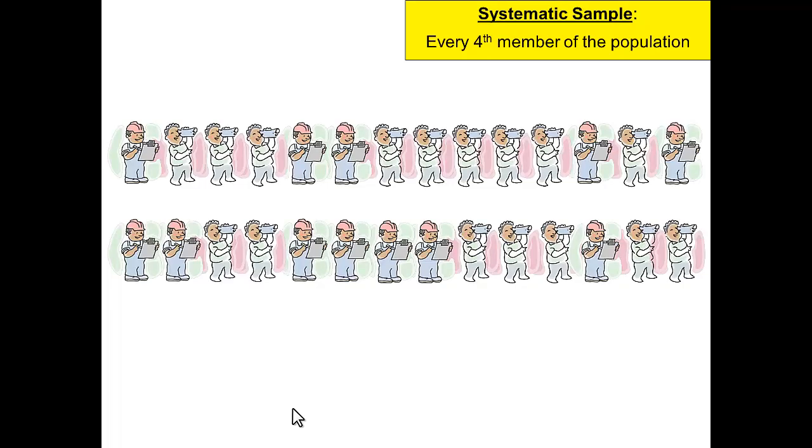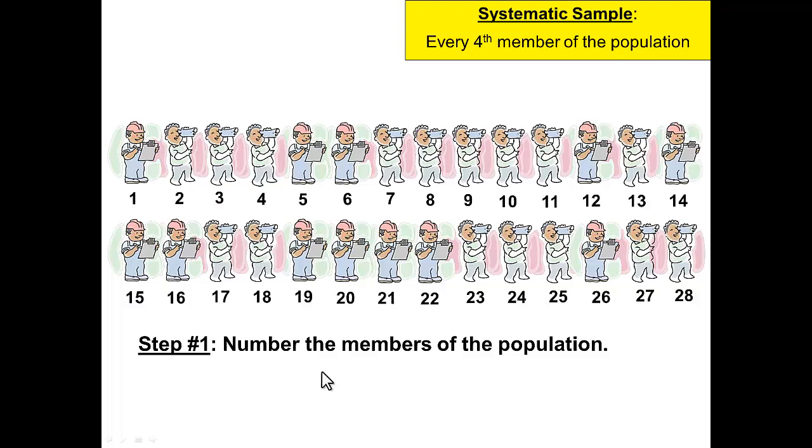In this case, it'll be much easier to demonstrate than just to say. So let's see if we can make sense of what I just said. Step number one: number the members of the population. We have some people here. Let's number them. We have 28 members.